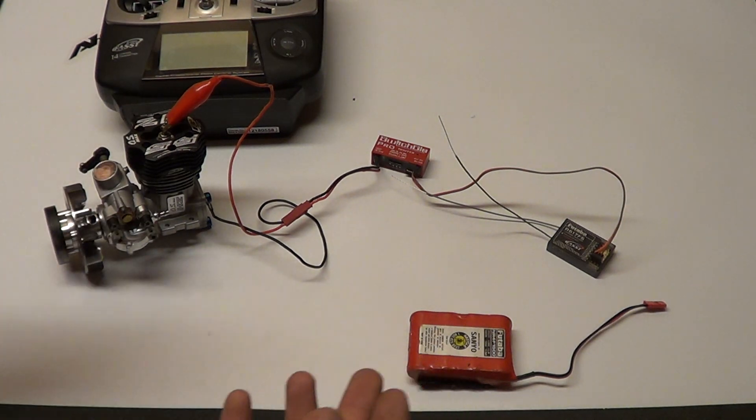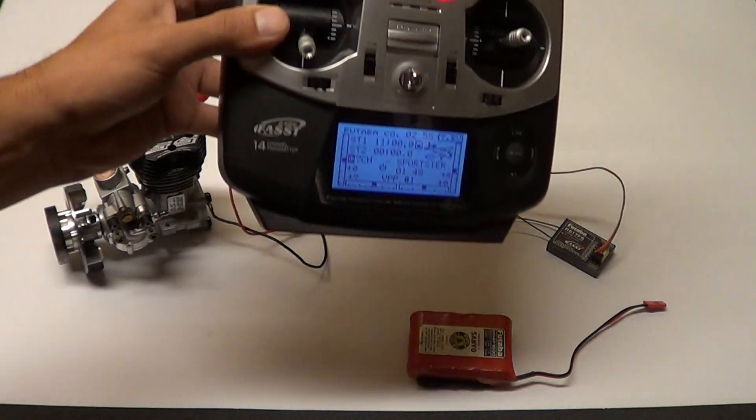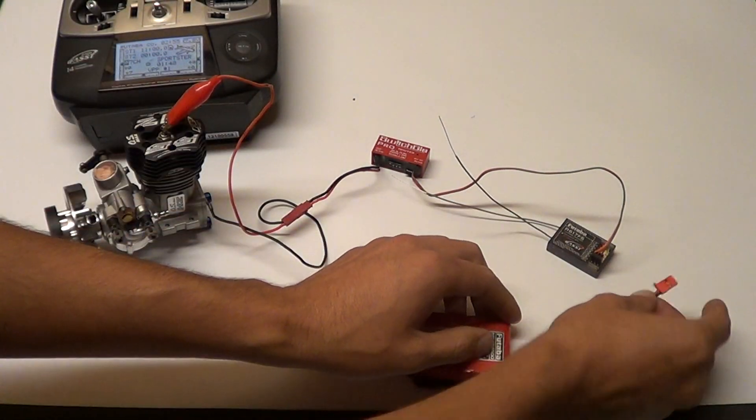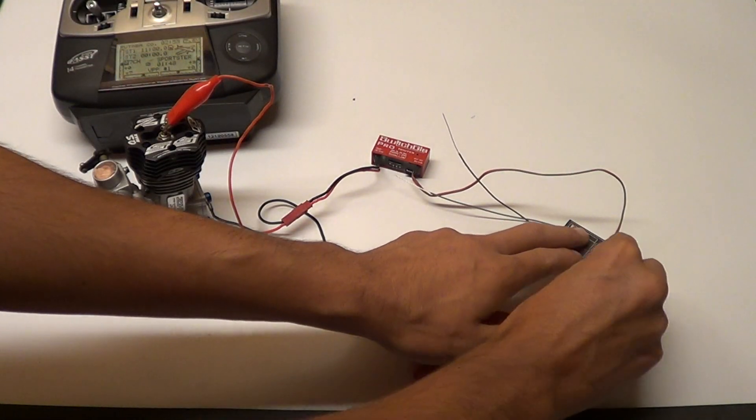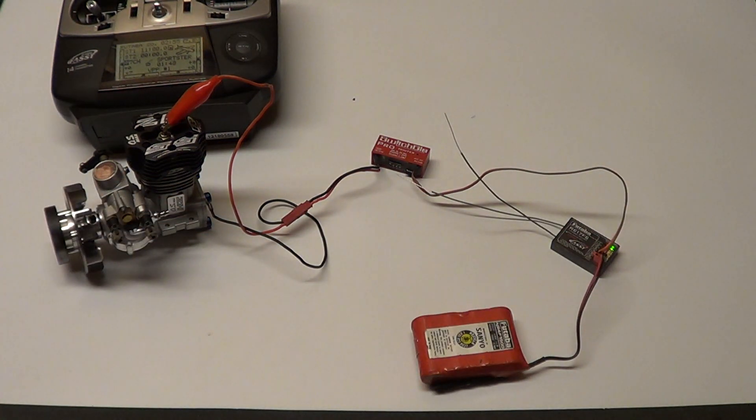What I'm doing now is turning on my radio - a standard Futaba 8FG. We're going to plug in our power source. We got a green light on the receiver and everything plugged in.